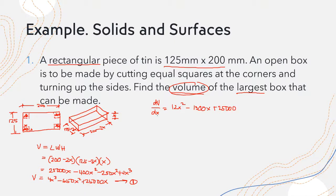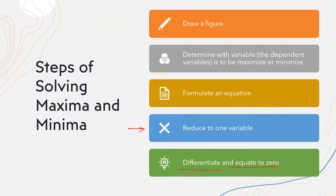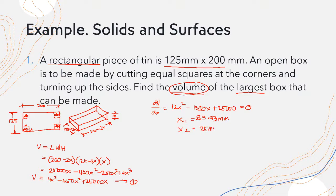After differentiating, we equate to zero and find the value of our variable. Setting the derivative equal to zero and factoring, we get x₁ = 83.33 millimeters and x₂ = 25 millimeters.